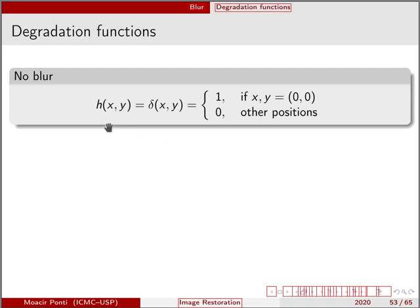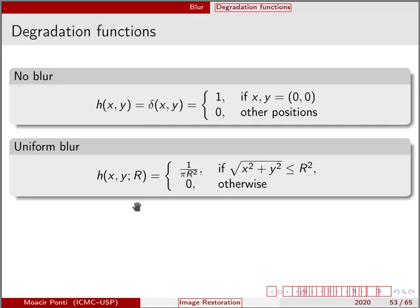We can define the H function as a Dirac delta with an impulse at the origin — so at X and Y equal to 0 and 0 elsewhere. In this case, there is no blur effect; this is actually the identity function, revealing a perfect system that does not alter the image. In the continuous case, we can also have uniform blur that blurs a given pixel uniformly and spreads it to its neighbors in a circular, radial way.